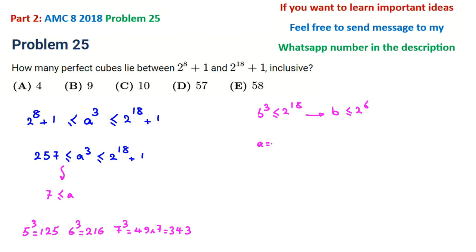We can say if a = 2⁶, then a³ = 2¹⁸. If we have one more than that, if a = 2⁶ + 1, then a³ will be (2⁶ + 1)³.